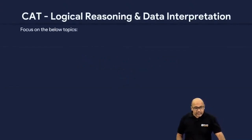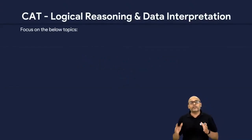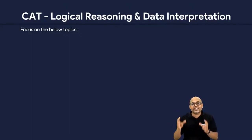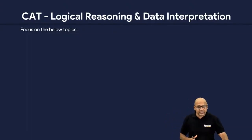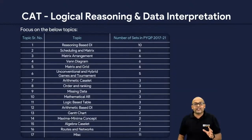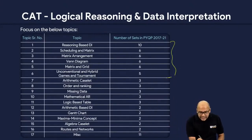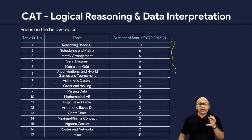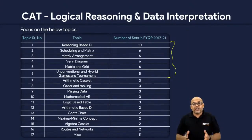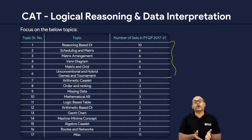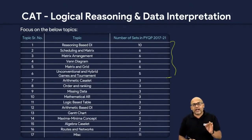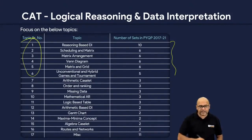Looking at the DI and LR section, we culled out every section, named it, and tagged every set from the last 5 years. This table shows the results. The most important topics for DI and LR are these 6. There are almost about 17 topics in total that we could figure out — obviously you cannot prepare all of them right now. So if you are starting today, your target is very simple: focus on these 6 topics.